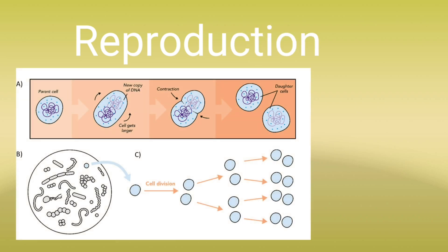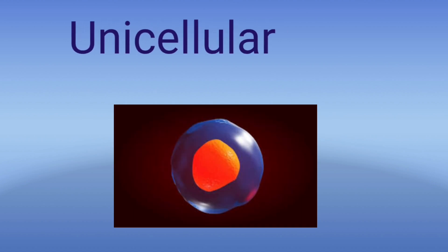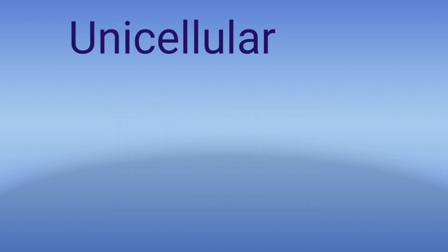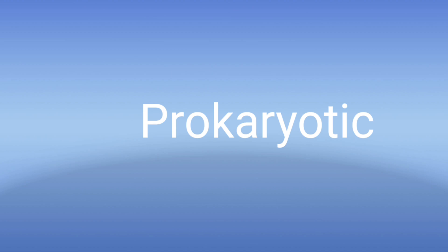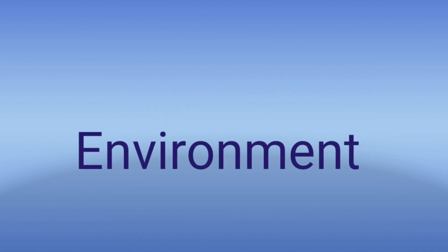...reproduction. They are unicellular organisms — this means they are made up of one single cell. They are prokaryotic cells, meaning they don't have any nucleus. Bacteria can live in any environment on Earth, regardless of how extreme its conditions may be.